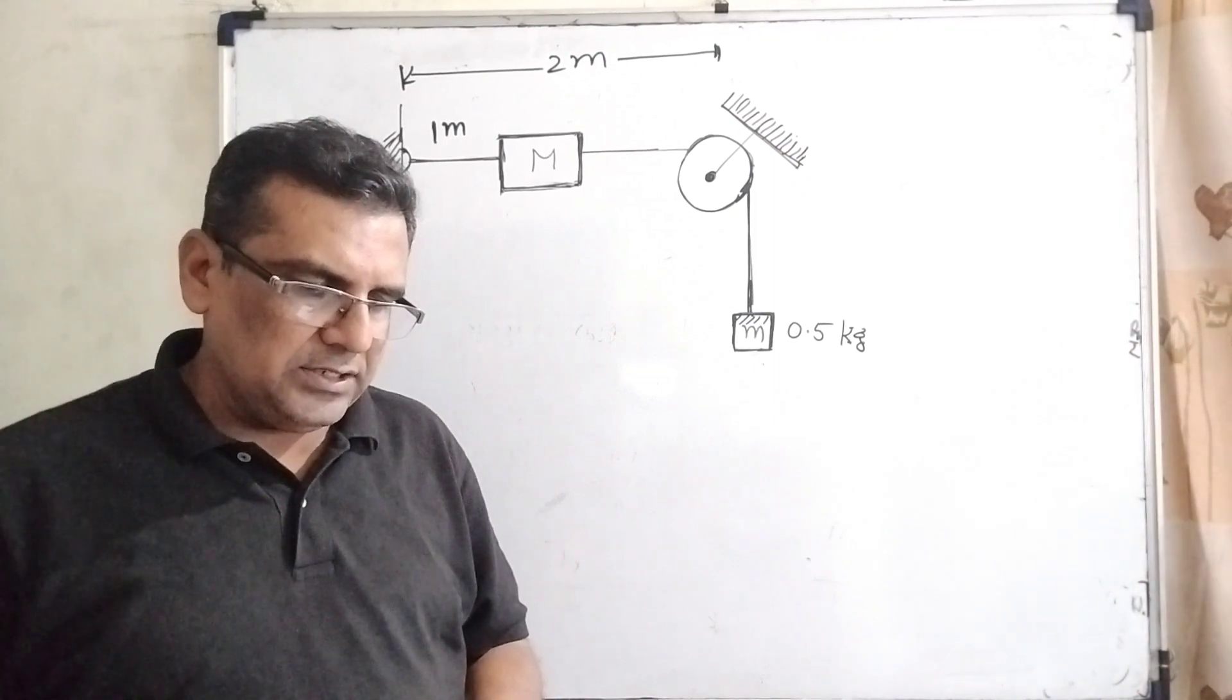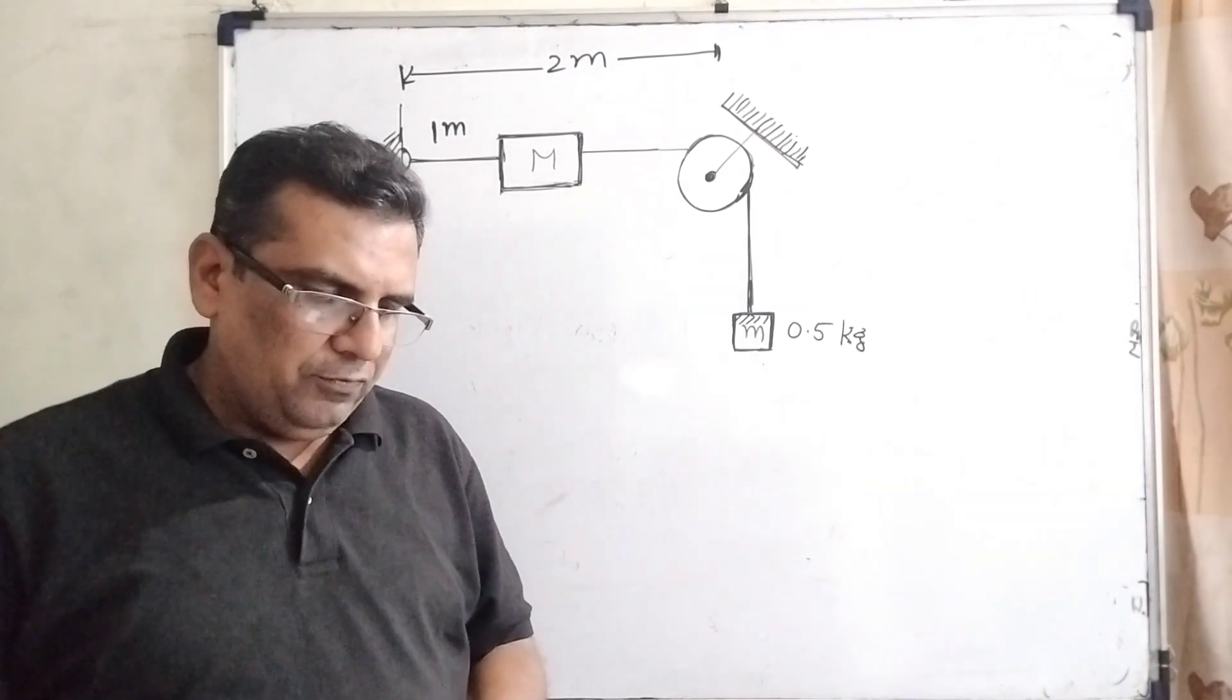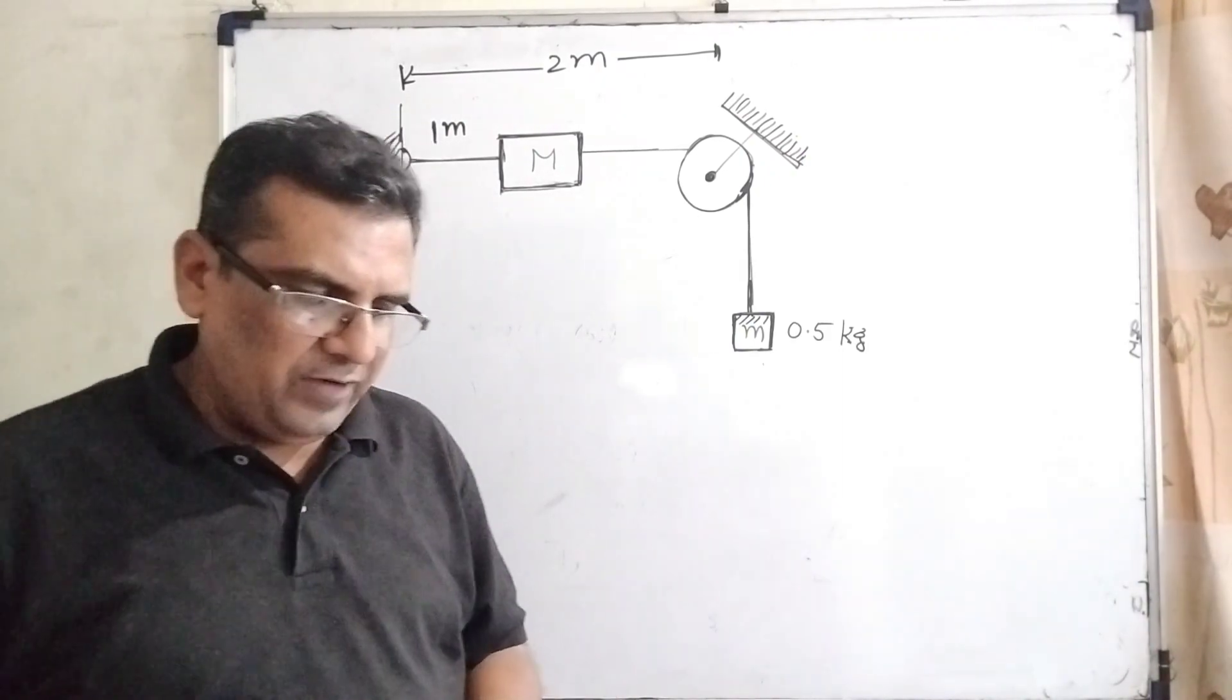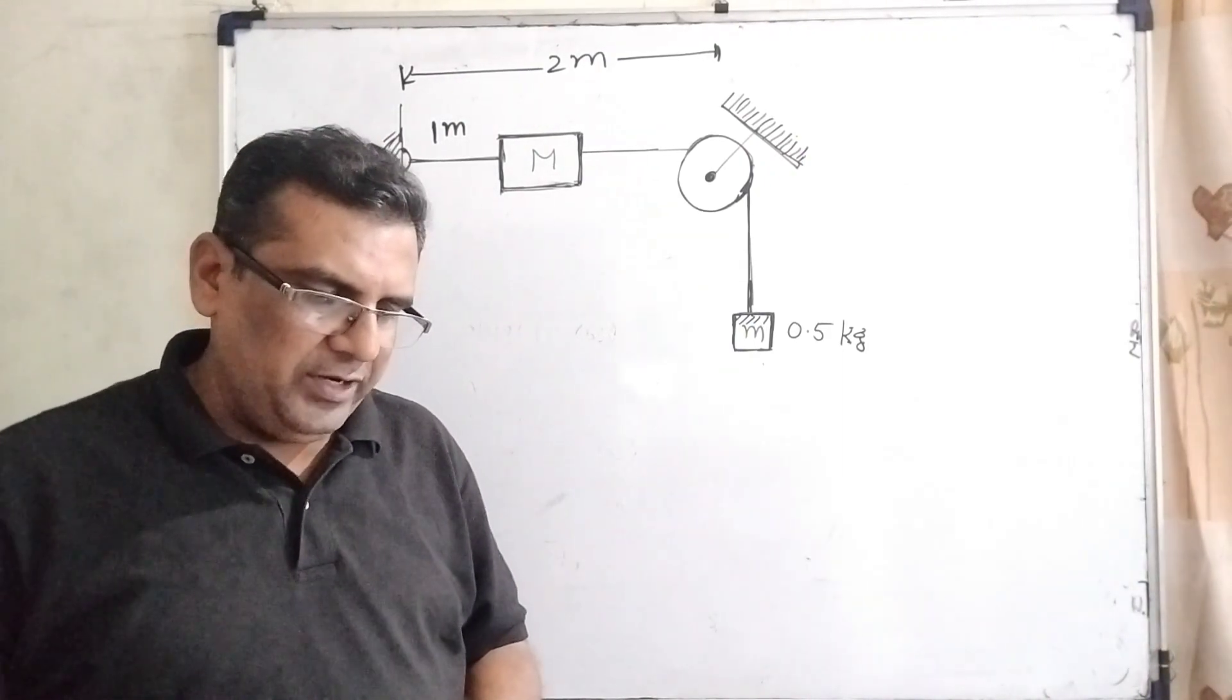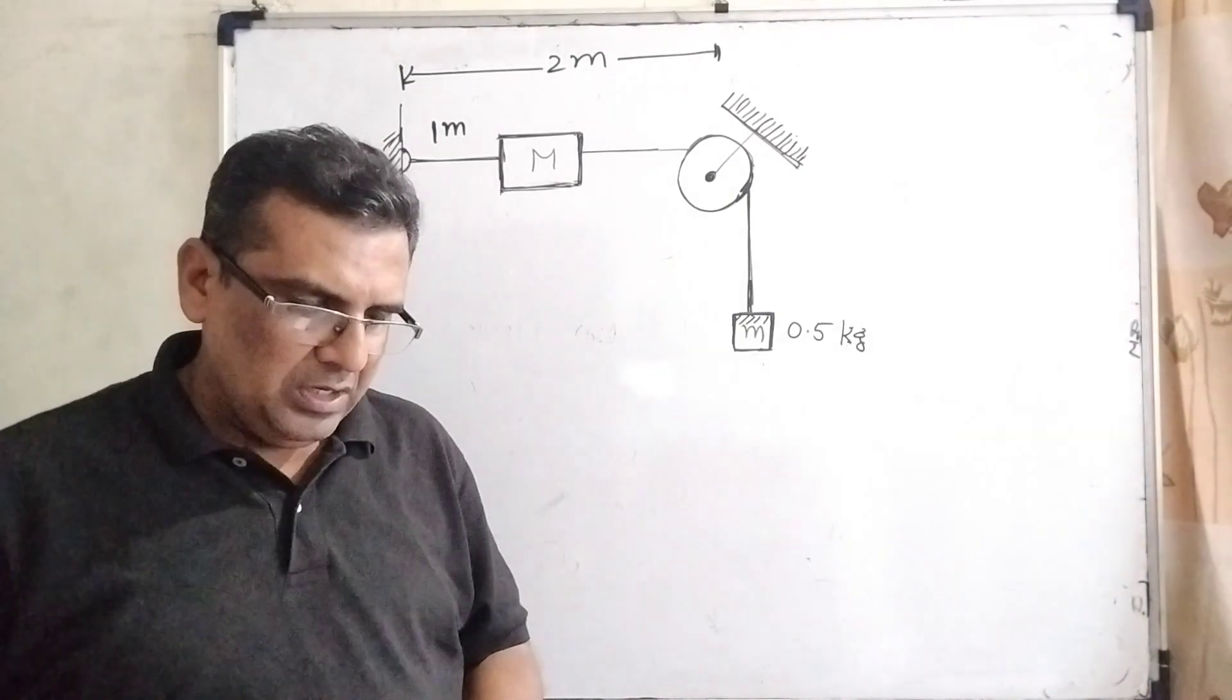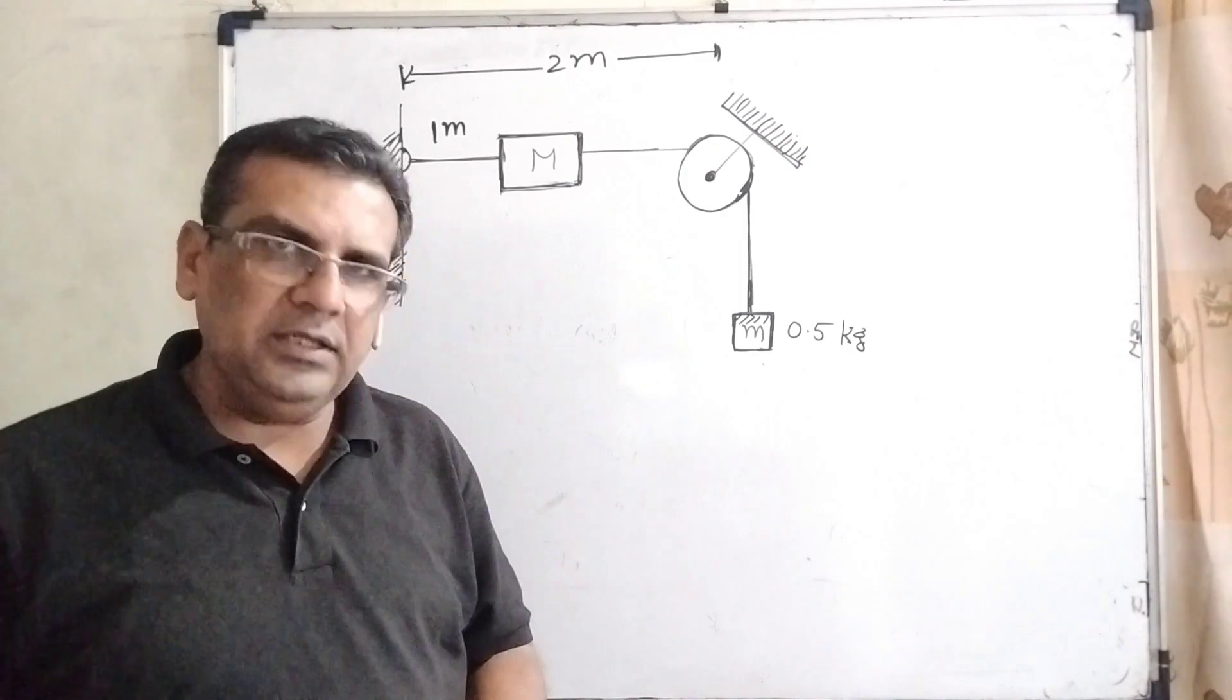It is at a distance of 1 meter from the wall. A mass small m, 0.5 kilograms, attached at the free end is held at rest so that the string is horizontal between the wall and the pulley and vertical beyond the pulley.